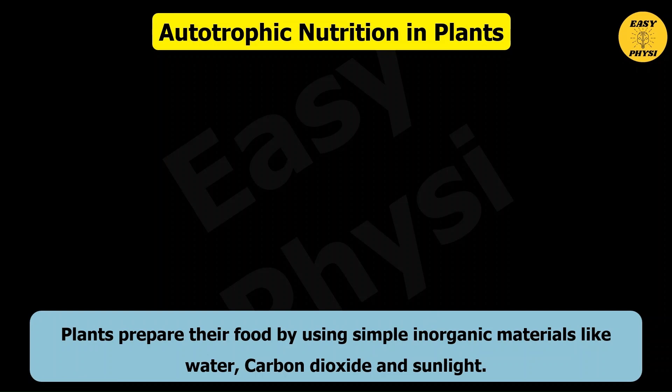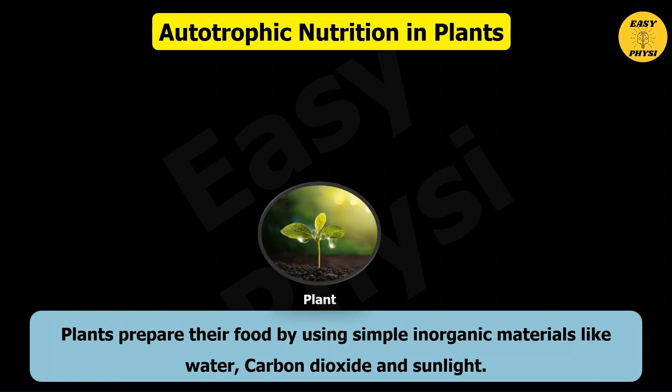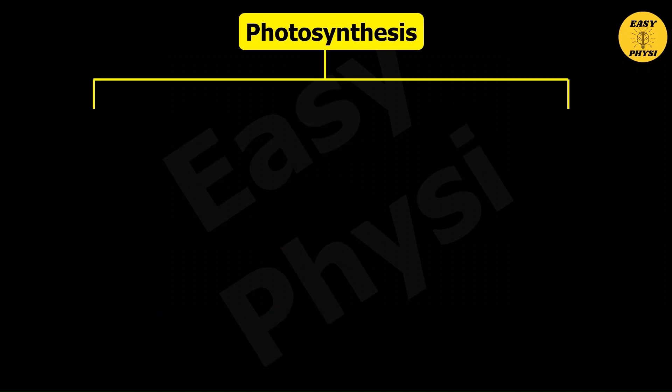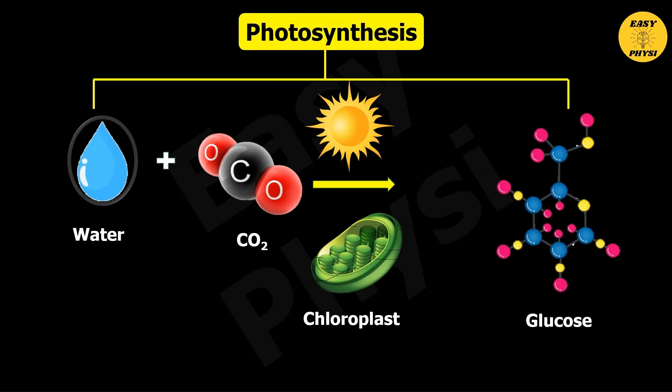Autotrophic nutrition in plants: Plants prepare their food by using simple inorganic materials like water, carbon dioxide, and sunlight. This process is called photosynthesis. Photo means light and synthesis means making or preparing food.